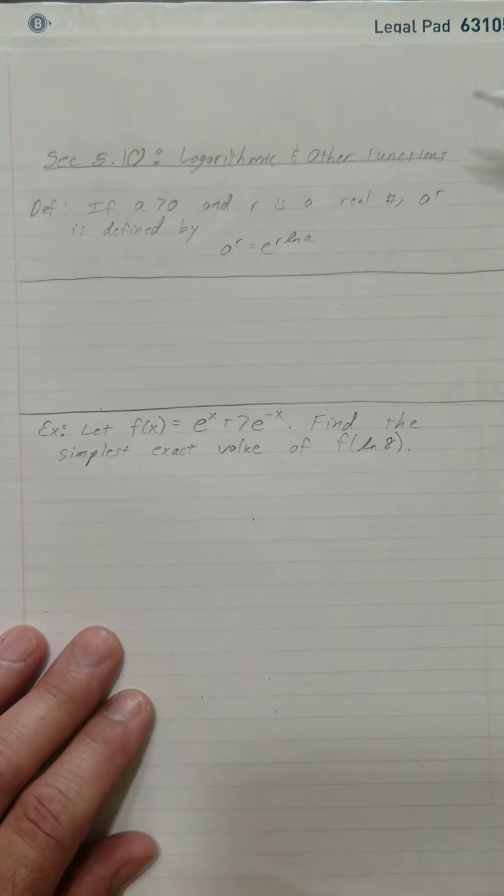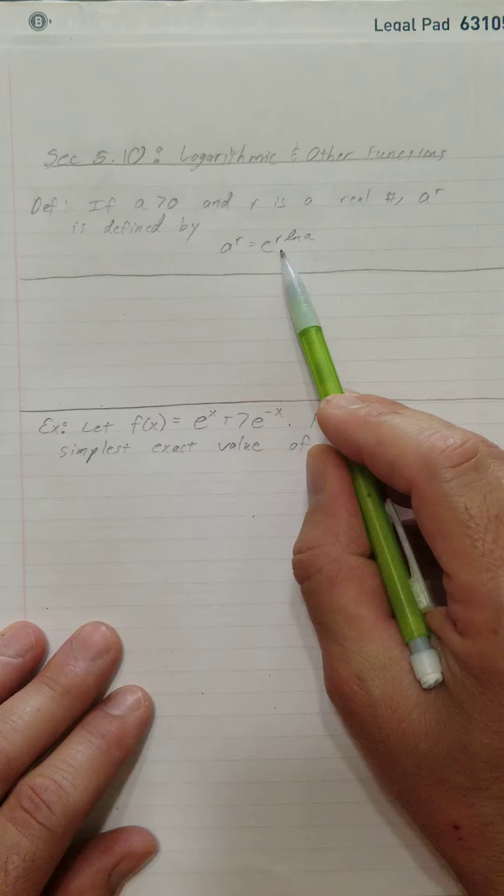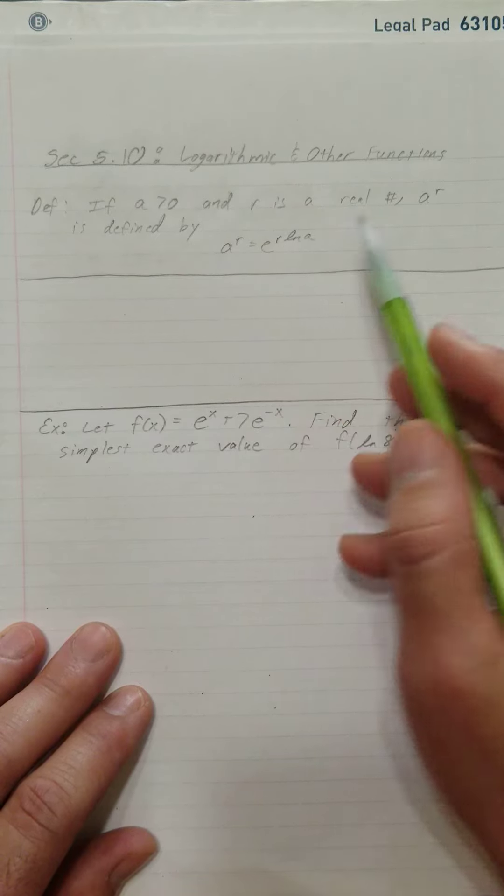All right, so let's look at logarithmic and other functions here. I have a definition. It says if a is greater than zero and r is a real number, a to the r is defined by a to the r is equal to e raised to the r natural log of a.